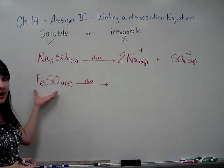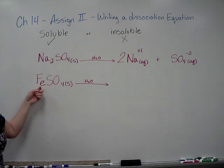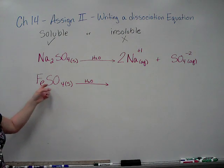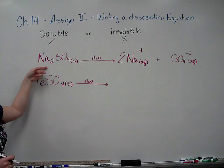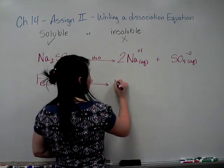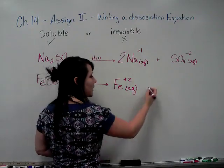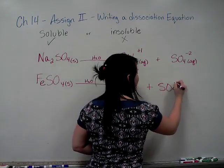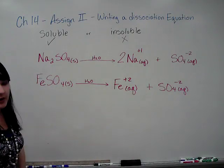Remember, it breaks up into its individual ions. So this one's kind of tricky. How do you know if it's iron 2 or iron 3? Because sulfate has a minus 2 charge because you memorized it, then the iron must be a plus 2 charge. So you get Fe plus 2. Be sure to write your aqueous plus SO4 minus 2. Be sure to write your aqueous.